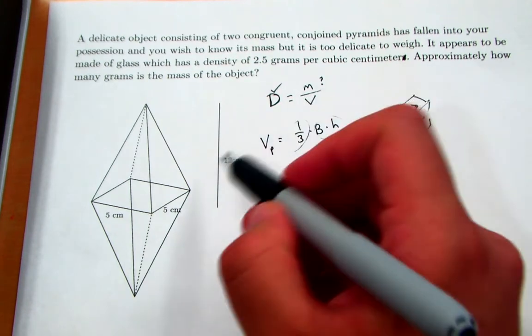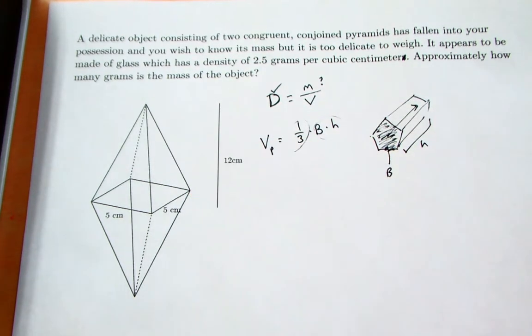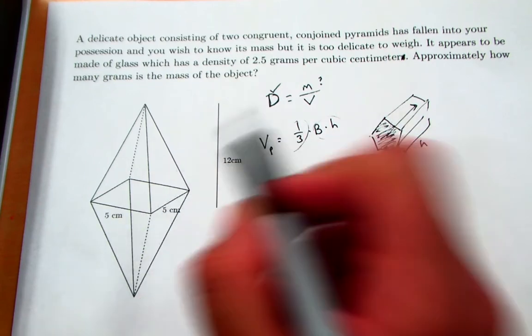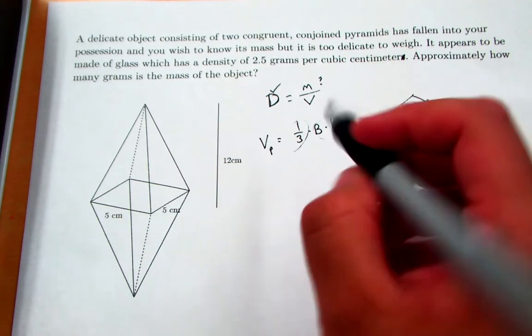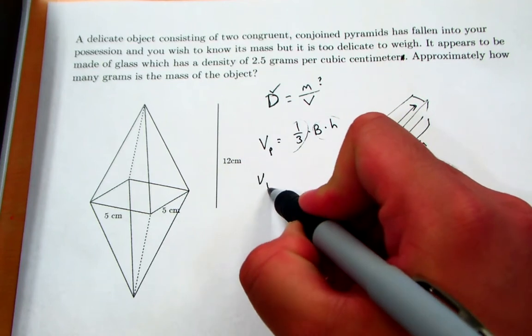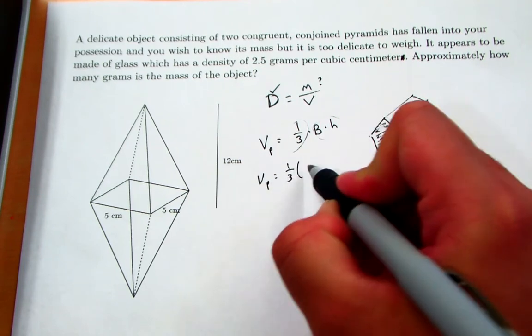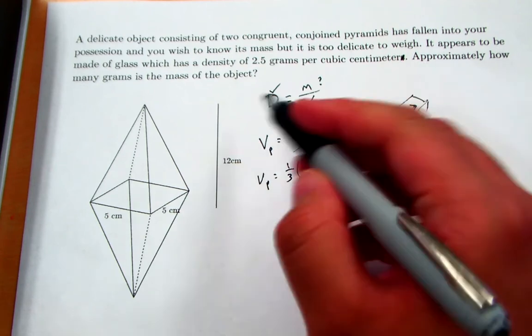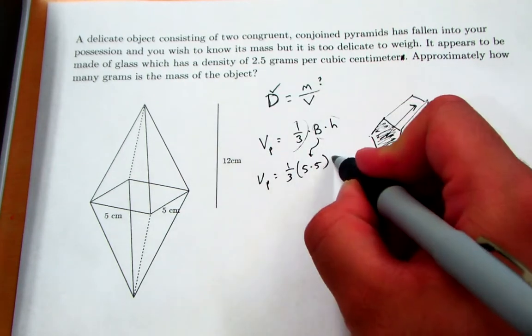So let's find the volume of, let's say, just one of these pyramids. So the base area, you'll notice, is a five-by-five rectangle, and that rectangle is also a rhombus which would therefore be a square. So our base area here is one-third, five times five. That's this right here.